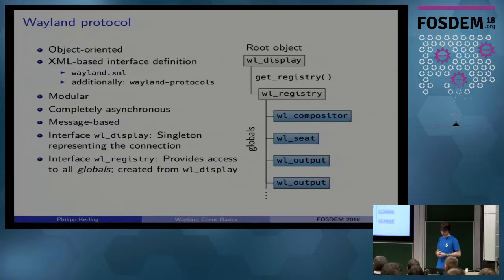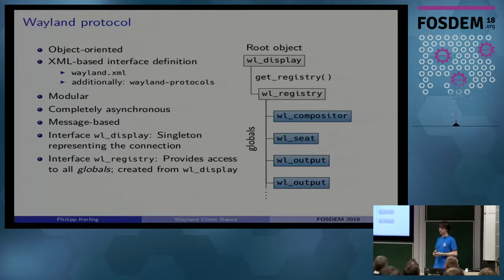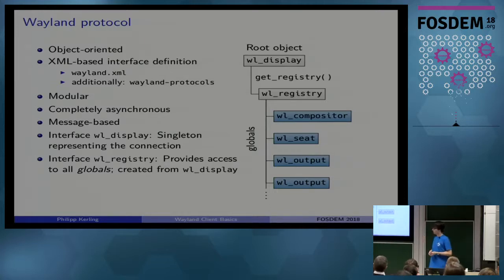What those globals are will vary depending on what compositor you're using and what environment you're in. Most of these globals are singletons — for example, wl_compositor is a singleton. Others, like wl_output, which represents a physical monitor, will appear multiple times. If you have multiple monitors connected, you will get multiple wl_output objects that give you the details on those monitors.